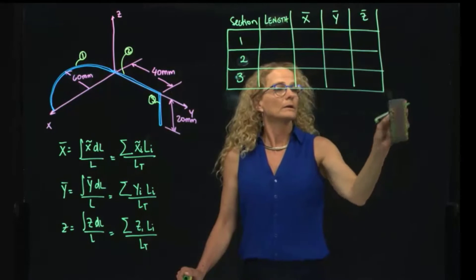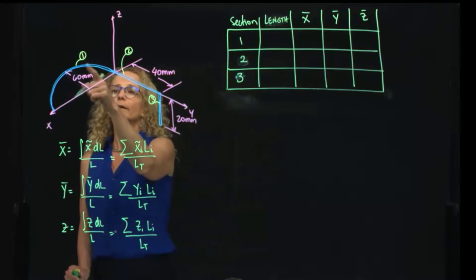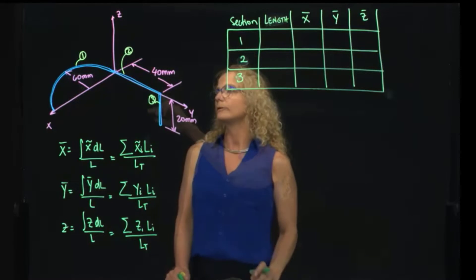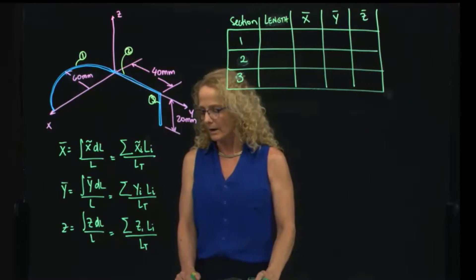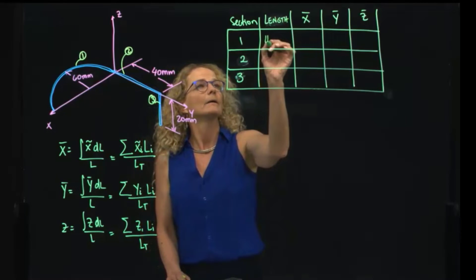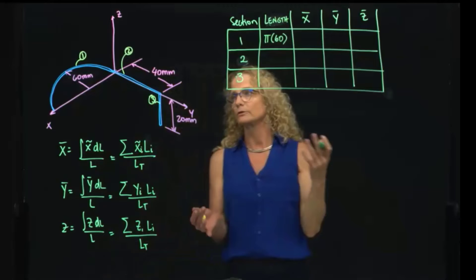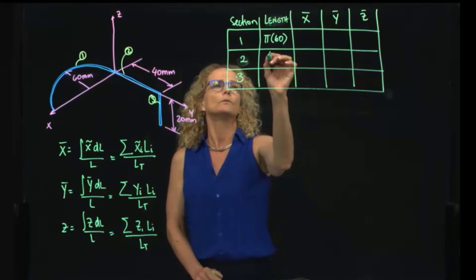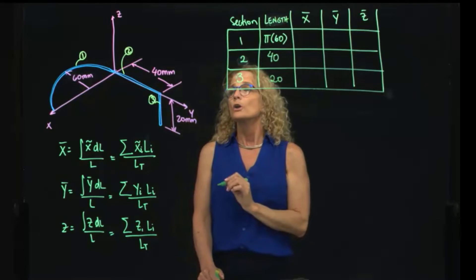So we have our little table right here. The first section, you know that the circumference or the perimeter of a circular is 2 pi r, and we have only half. The third one is pi r, so that will be pi times 60. I will do it in millimeters, so my results will be in millimeters. And for the second, it's 40 millimeters, and for the third one, it's 20 millimeters.